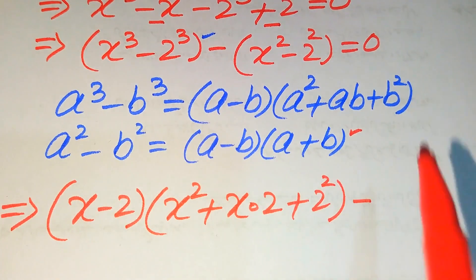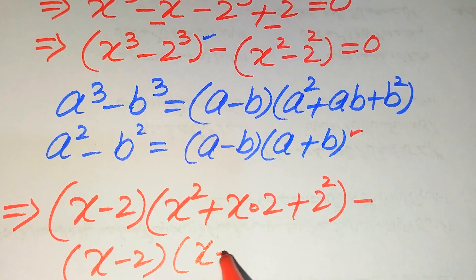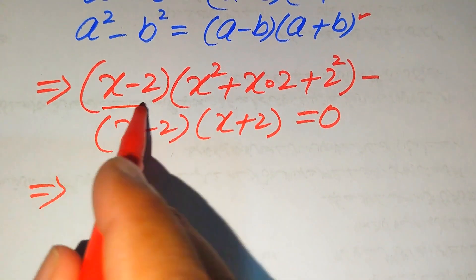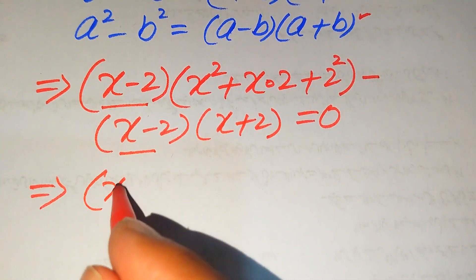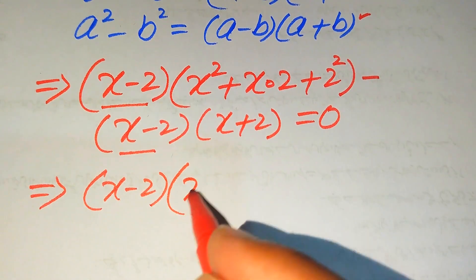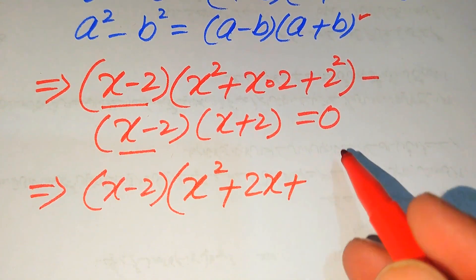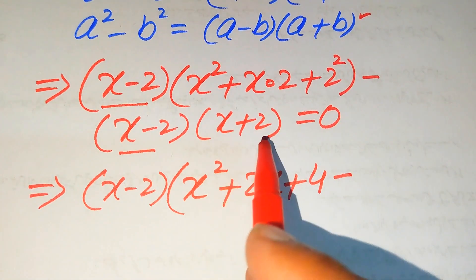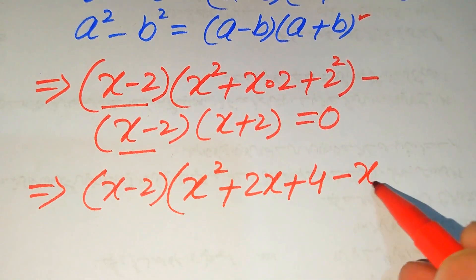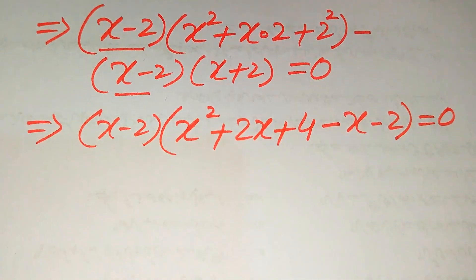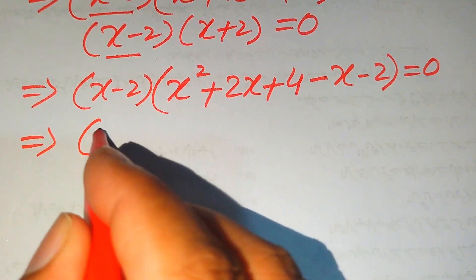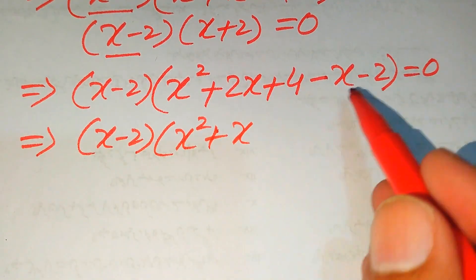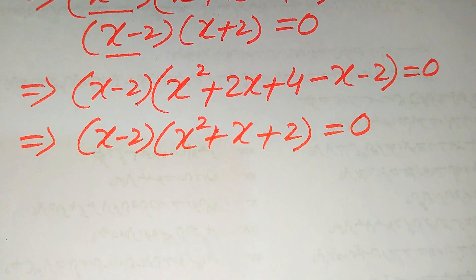On the second term we apply the second algebraic formula: a squared minus b squared equals (a minus b)(a plus b), giving (x minus 2)(x plus 2). This whole equation equals 0. Both terms involve (x minus 2), so we take (x minus 2) common. The remaining expression becomes x squared plus 2x plus 4 minus (x plus 2), which simplifies to x squared plus x plus 2, and this whole equation equals 0.